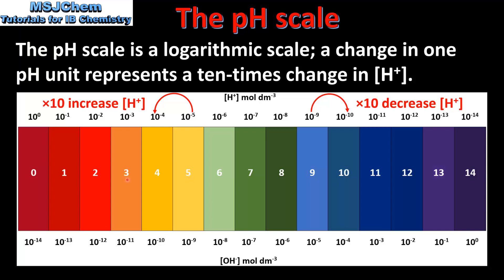A decrease in pH value from 3 to 0 represents a 1000 times increase in hydrogen ion concentration. A change in pH from 9 to 10 represents a 10 times decrease in hydrogen ion concentration. And if we have an increase in pH value from 11 to 14, this represents a 1000 times decrease in hydrogen ion concentration.